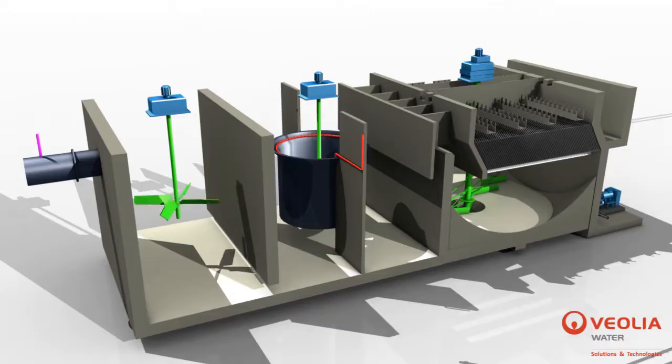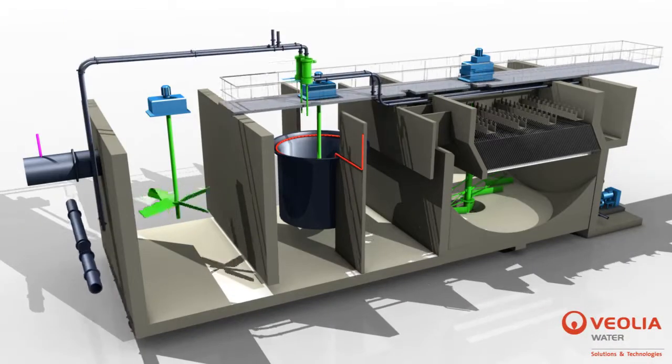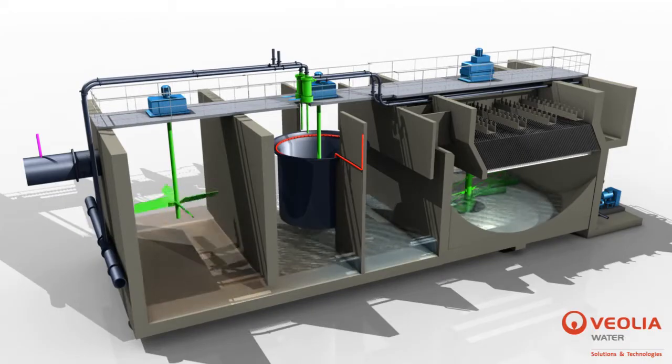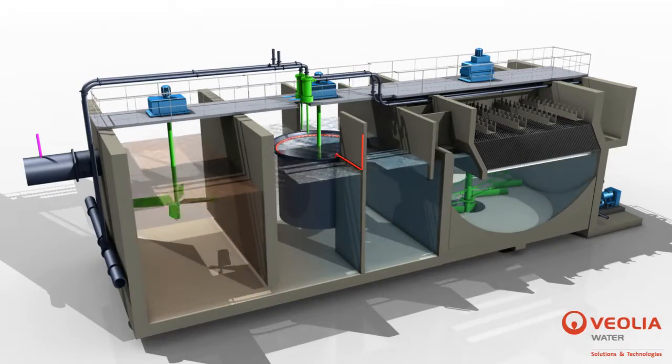A centrifugal pump transports the microsand sludge slurry from the settling tank to a hydrocyclone for microsand cleaning, recovery, and reuse in the process.